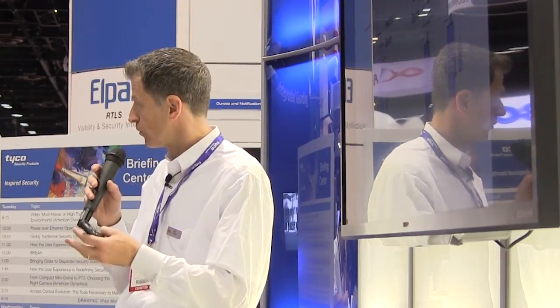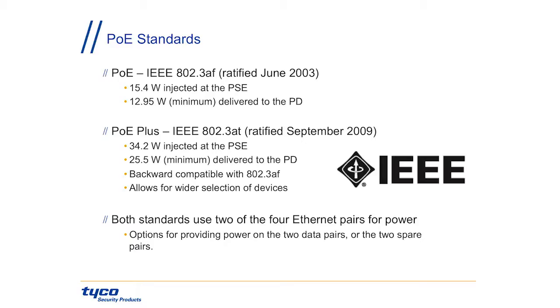Midspans actually do a little better job at raw power. If you have a 24-port device and you want 30 watts of power per port, that device will do it — it will provide 700 watts of power all at once. With endspans, you might have to look at the fine print, because they might say they can do 30 watts per port but not all at the same time, since the total power rating for that device might only be 250 watts. So watch out on the different ratings of these devices.